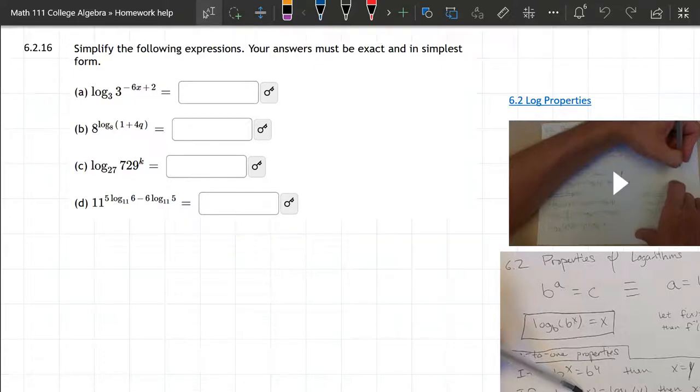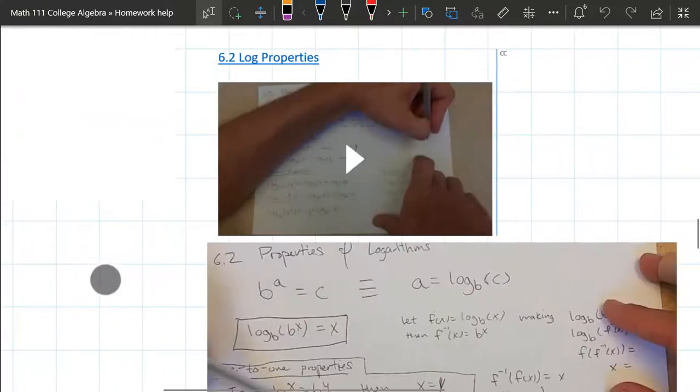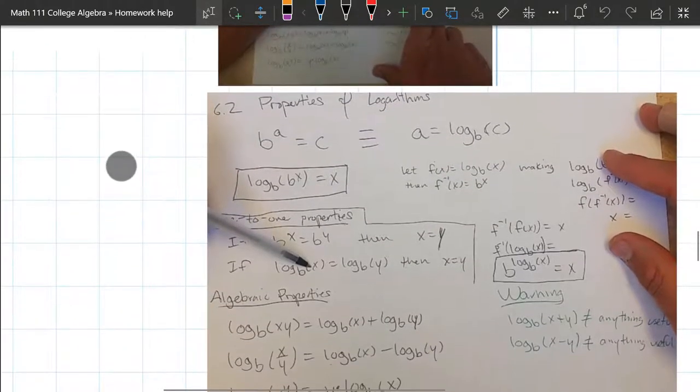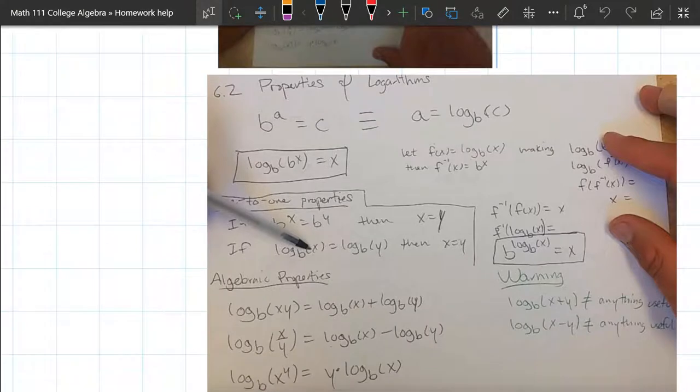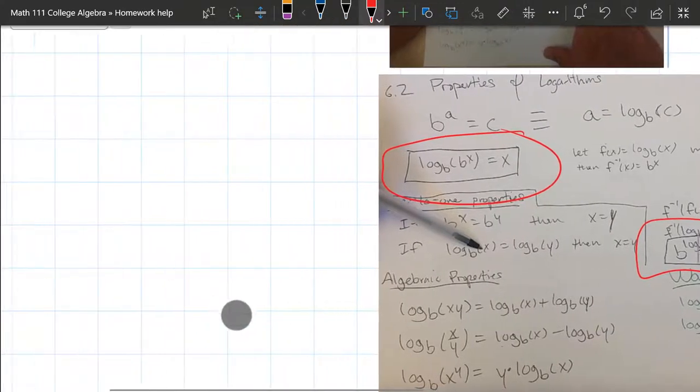We're going to look at problem 16 where we're simplifying. I do have a few log properties written down here that are not in the book, they're only in the video lectures. The two that could be useful for us here are already in a box, but I just put another little circling box thing around them.